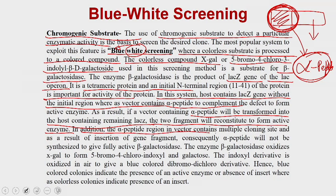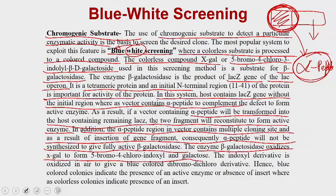The alpha peptide region is a multiple cloning site. If a gene is inserted there, the alpha peptide cannot complement the lacZ, so functional beta-galactosidase is not produced. Beta-galactosidase oxidizes X-gal to form 5-bromo-4-chloro-indoxyl and galactose; the indoxyl derivative is further oxidized in air to give a blue di-bromo-dichloro derivative. Hence, blue colonies indicate active enzyme and absence of insert, whereas colorless colonies indicate the presence of an insert.